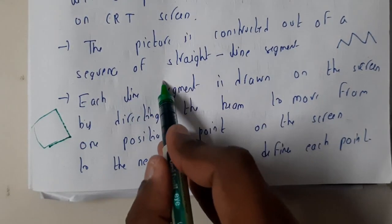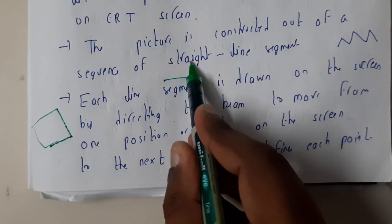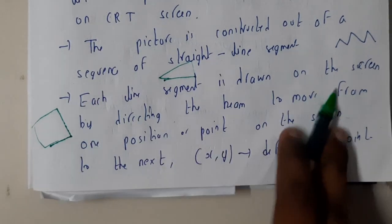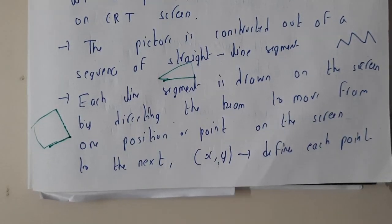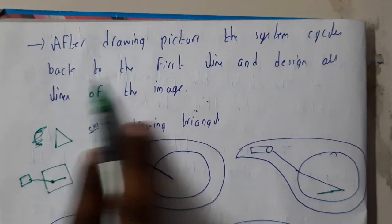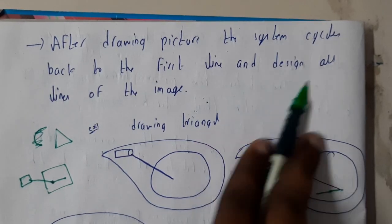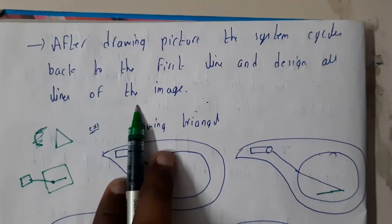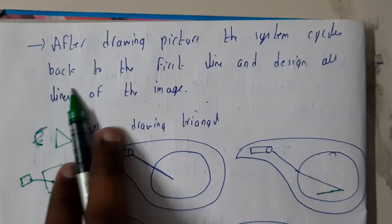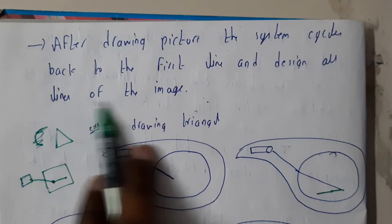Let us assume this is your beam - initially it is here, you move it till here, then here, then here, and we got our shape. That is nothing but random scan. We will be moving it according to our definition from an X-Y point to our required point. After drawing the picture, the system cycles back to the first line and redraws all lines of the image.